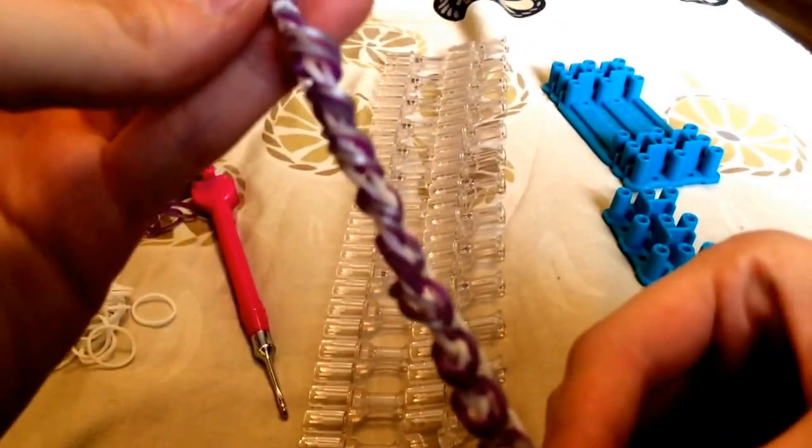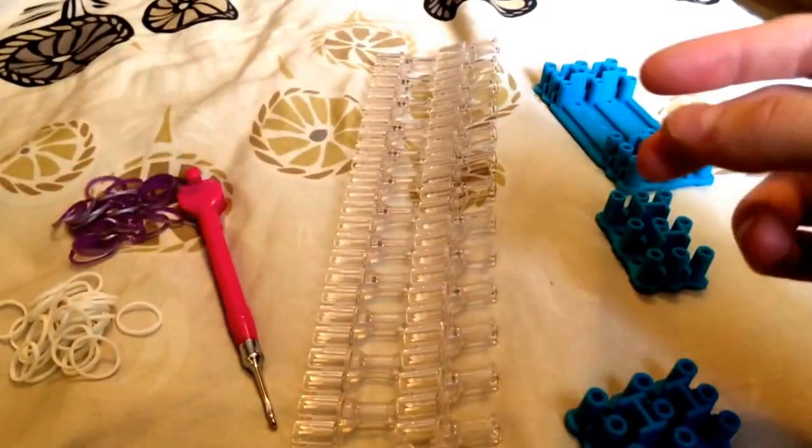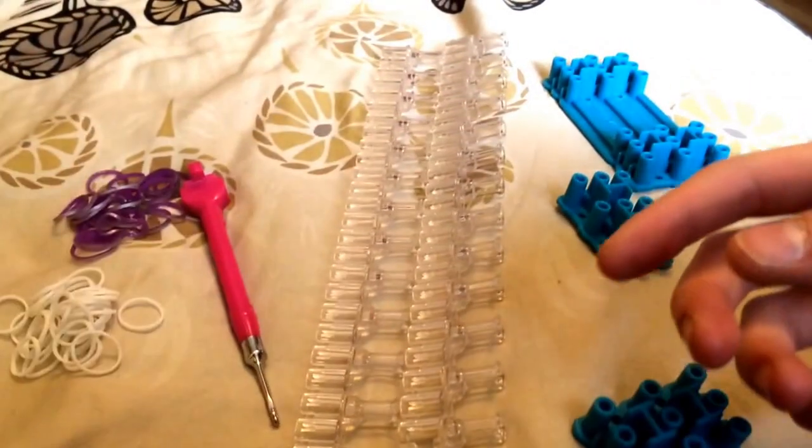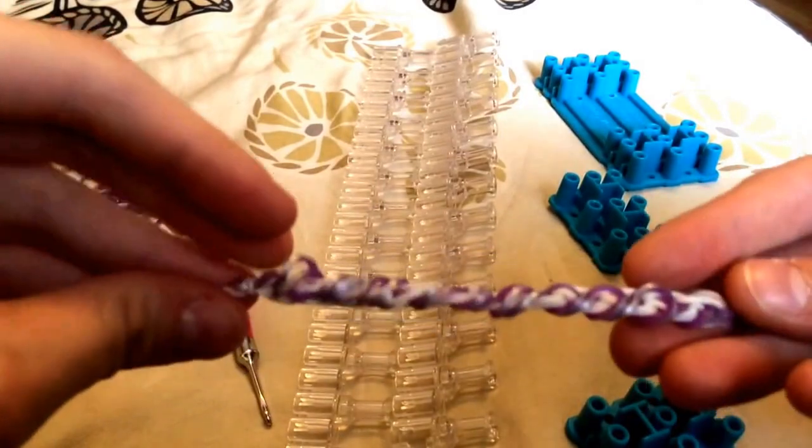So I'm going to be teaching you how to make this. I'm also going to show you how to set up your loom so you can do it so it goes the full way around your wrist. This is actually just a sample I made just to see if I liked it, so I don't have one that's fully around my wrist yet.